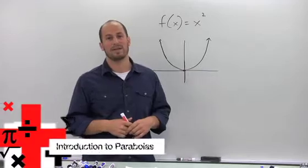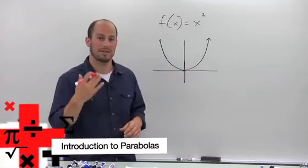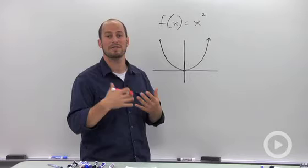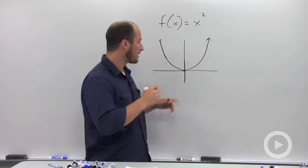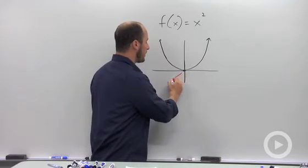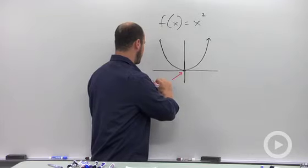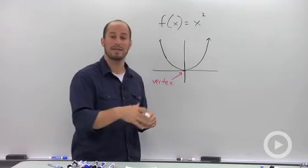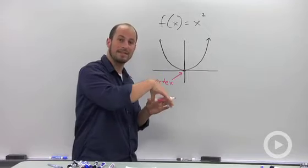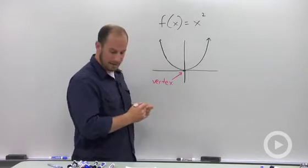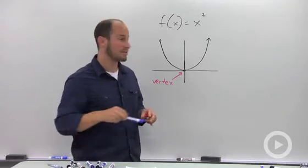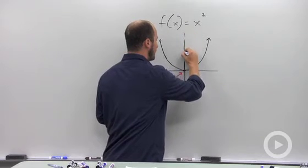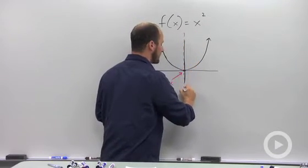The graph of y equals x squared is, as you know, called a parabola. The lowest point is called the vertex — it could also be the highest point if the parabola is facing the other direction. There is also what's called the axis of symmetry, which is basically an invisible line that goes down the center of the graph.